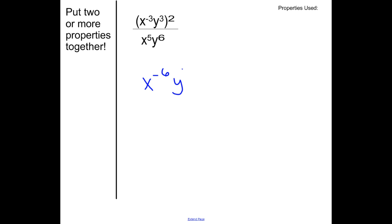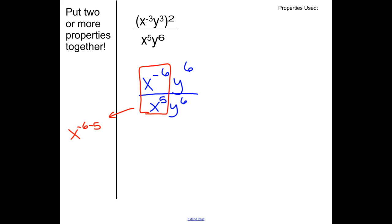Now let's do tougher problems using more than one property. First, get rid of the parentheses by distributing that squared through each piece using power of a product. On top: x to the negative 3 squared becomes x to the negative 6th, and y to the 3rd squared becomes y to the 6th. The bottom stays x to the 5th, y to the 6th. Now look at x to the negative 6th over x to the 5th — using the quotient rule that's x to the negative 6 minus 5, which is x to the negative 11th, or 1 over x to the 11th.